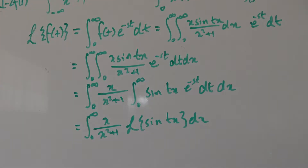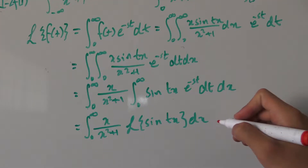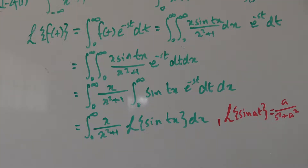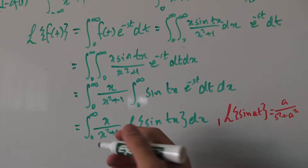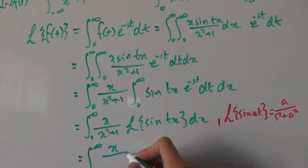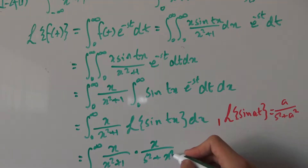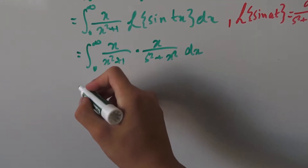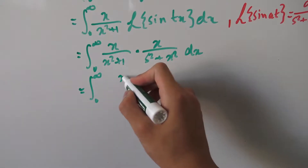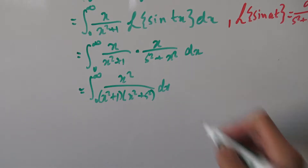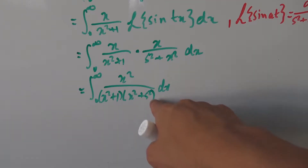Using the known formula: the Laplace transform of sine of at equals a over s squared plus a squared, and replacing a with x, the Laplace transform of sine of tx becomes x over s squared plus x squared. Substituting this in, we get the integral from 0 to infinity of x over x squared plus 1 times x over s squared plus x squared dx, which combines to the integral from 0 to infinity of x squared over (x squared plus 1)(x squared plus s squared) dx. Now we apply partial fraction decomposition.